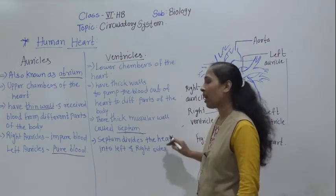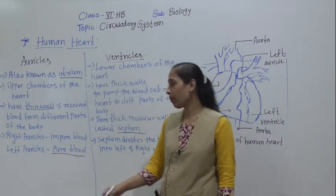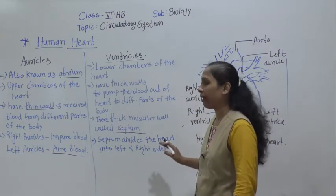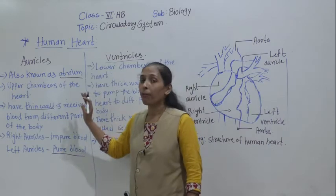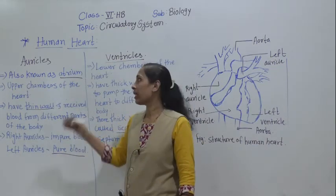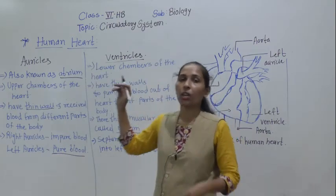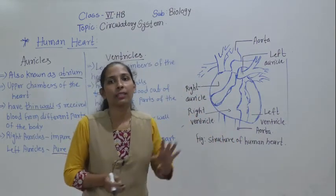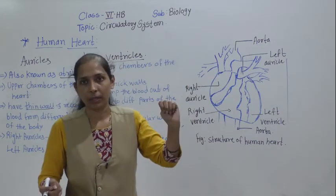The septum divides the heart into the left side and the right side. So the two main parts of the heart are the auricles and the ventricles, and with two auricles and two ventricles, the human heart has four chambers in total.